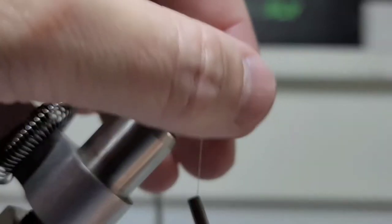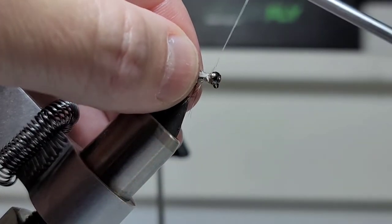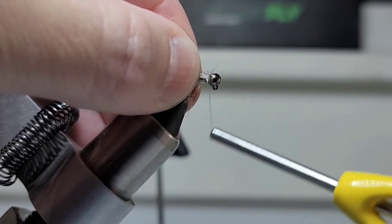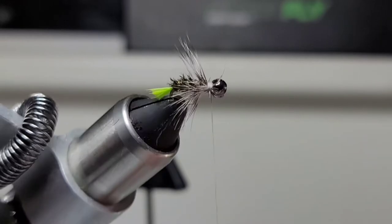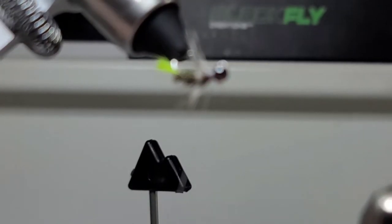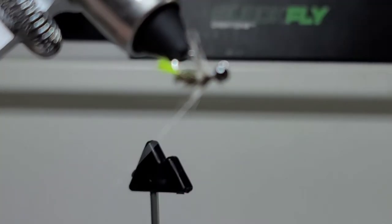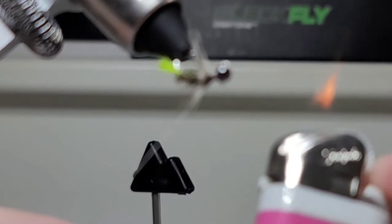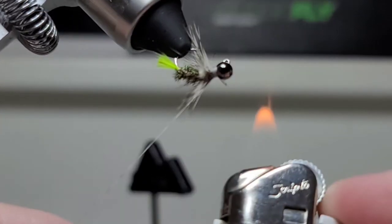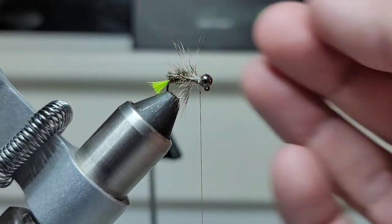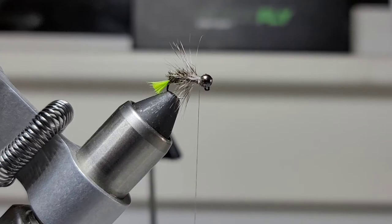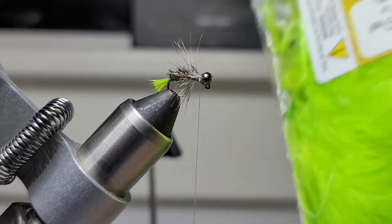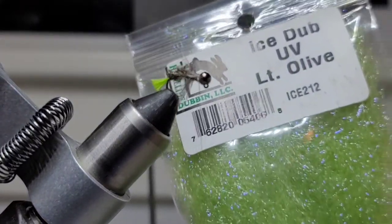Okay, so I'm going to pull all these hackle fibers back, try to capture as many of those as I can. I don't like those extra fibers, so one thing you can do is take a lighter and just barely, barely hit those fibers. Be careful you don't hit your thread. I got into the hackle a little bit but whatever, maybe the fish won't notice.